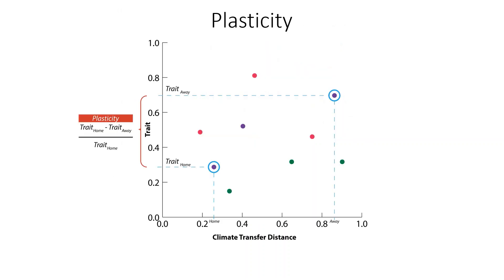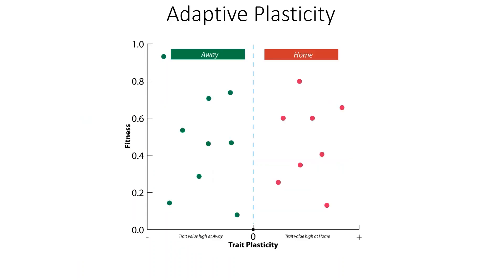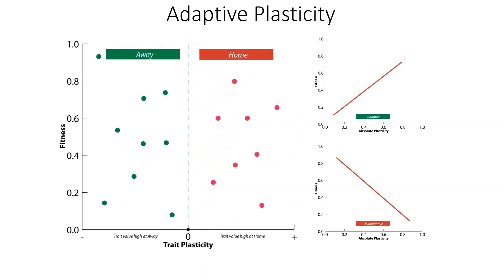Next, I wanted to see how plastic the traits were. I selected for trait values within family. Out of the three gardens, the trait value at the garden closest to the source climate was designated as home, and the garden farthest from source climate was designated as away. Plasticity was estimated as trait home minus trait away divided by trait home. When plasticity values were plotted against fitness, positive values meant that trait values were highest at home, and negative values meant trait values were highest at away, giving the direction of plasticity. To understand whether it was adaptive or non-adaptive, the absolute value of plasticity was plotted against fitness — a positive slope indicated adaptive plasticity, and a negative slope indicated maladaptive plasticity.